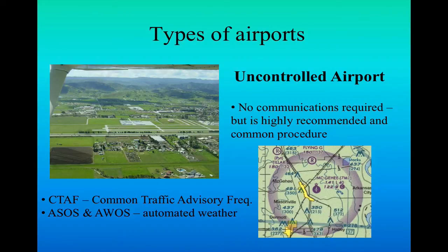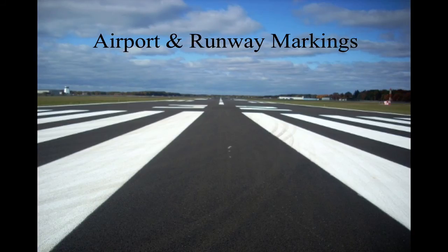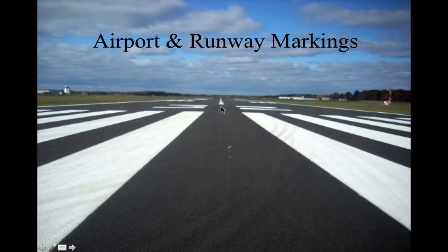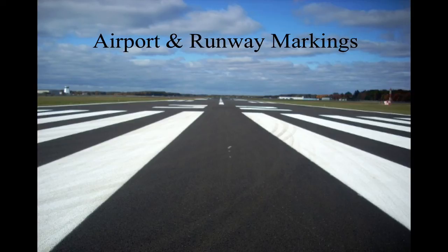Now let's look at the airport itself — the runways, markings, signage, and various features. Looking down a runway, you can see the markings are white in color. Colors mean different things. The very center of the runway has a dashed white line — that's the centerline. We always stay on the centerline; unlike cars where you stay between the lines, in flying we are on the line for both takeoff and landing. On a taxiway, the line is yellow and solid, not dashed.